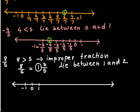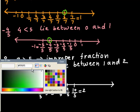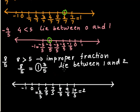1 is nothing but 5 over 5. So I will write 6 over 5, 7 over 5, 8 over 5, 9 over 5, 10 over 5 which is equal to 2. So our given number 8 over 5 is here.